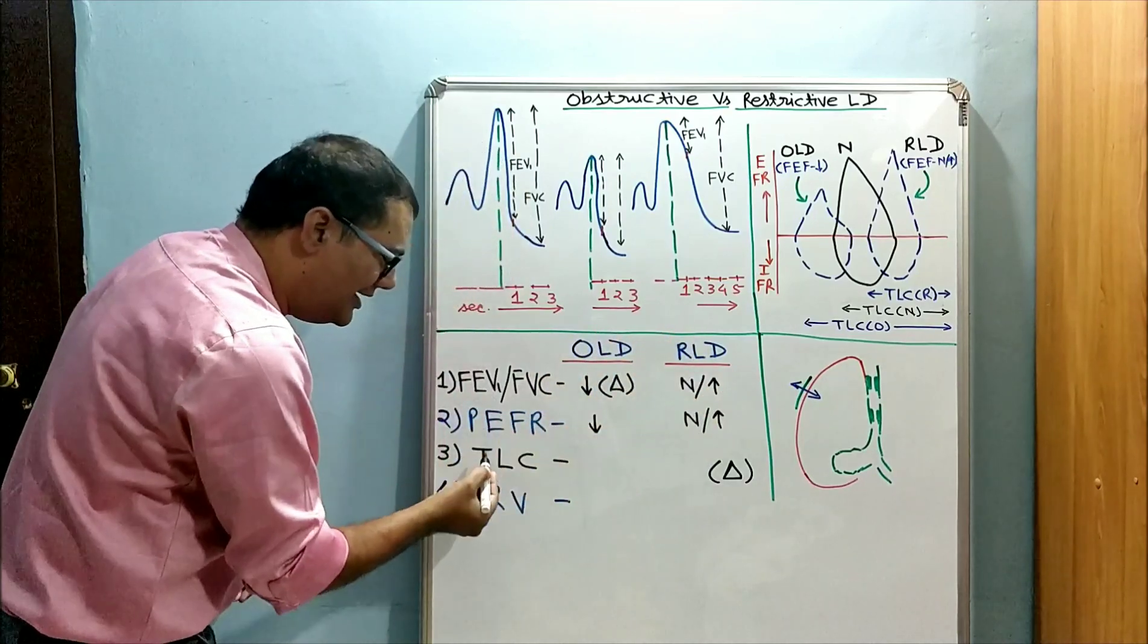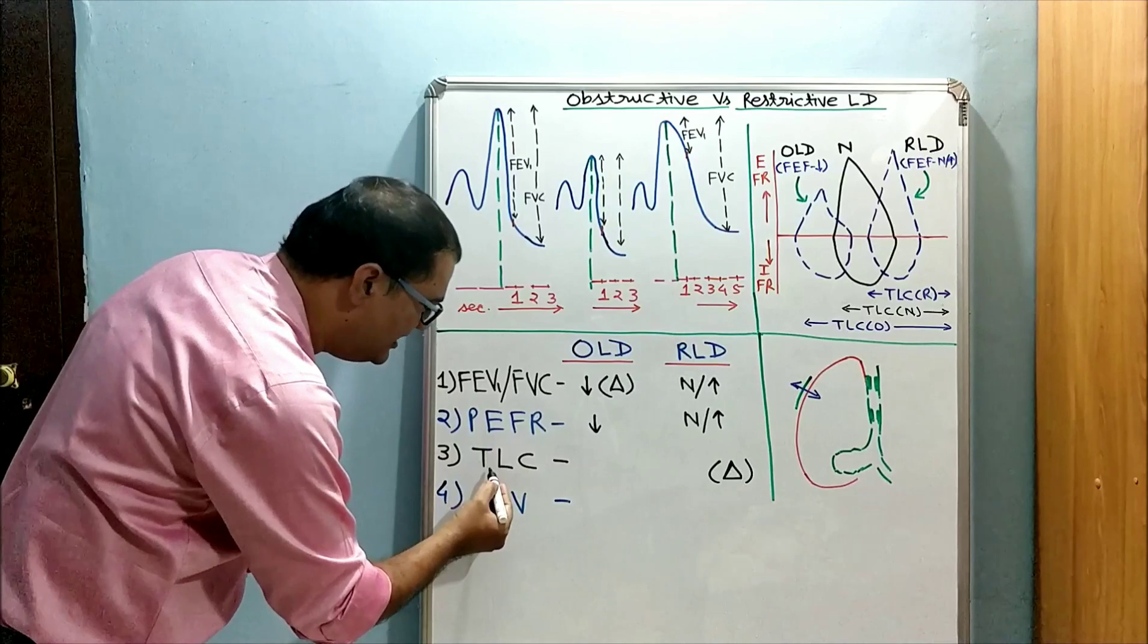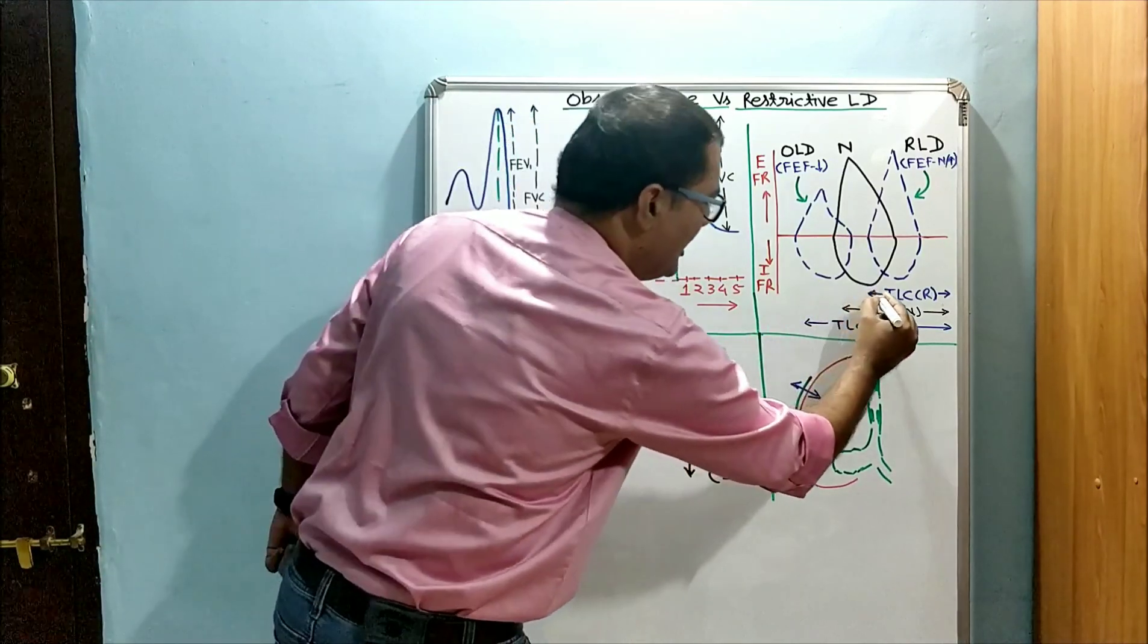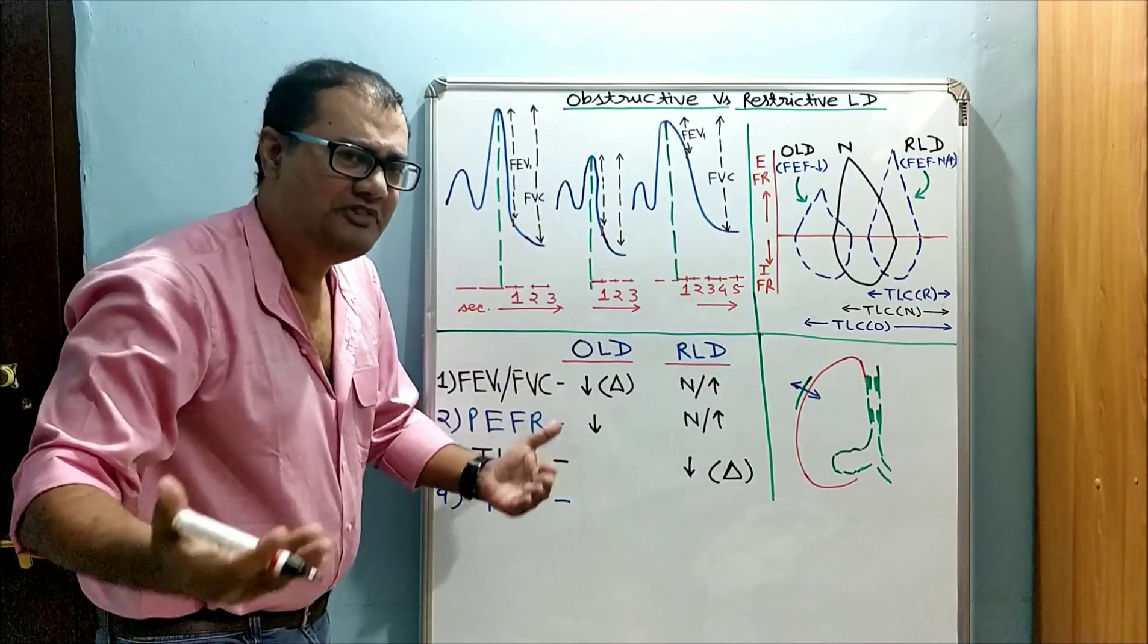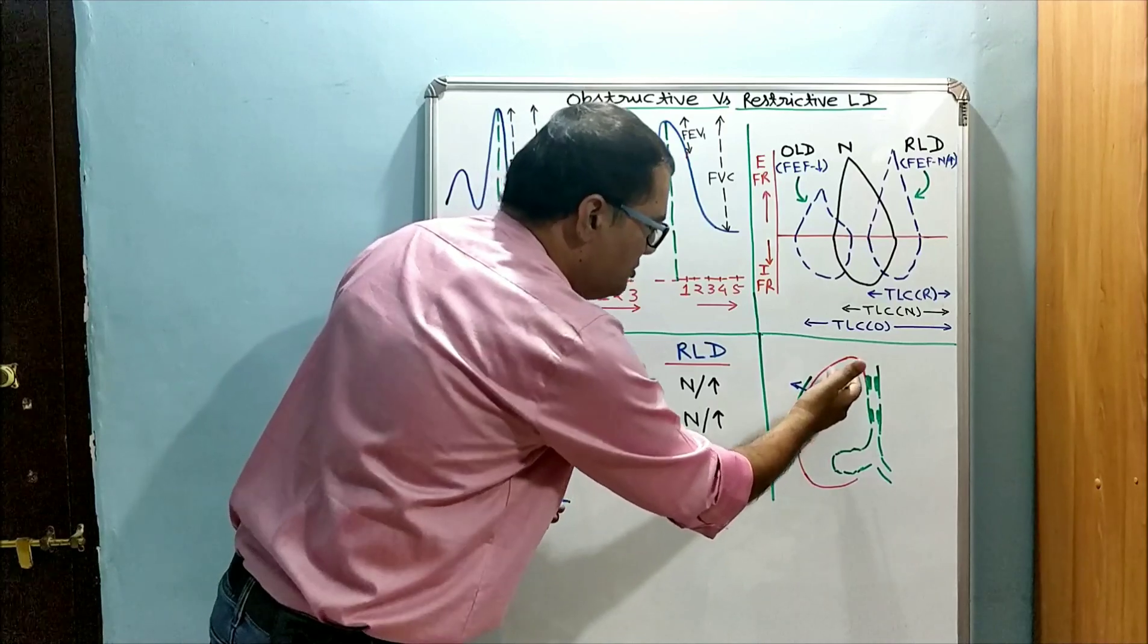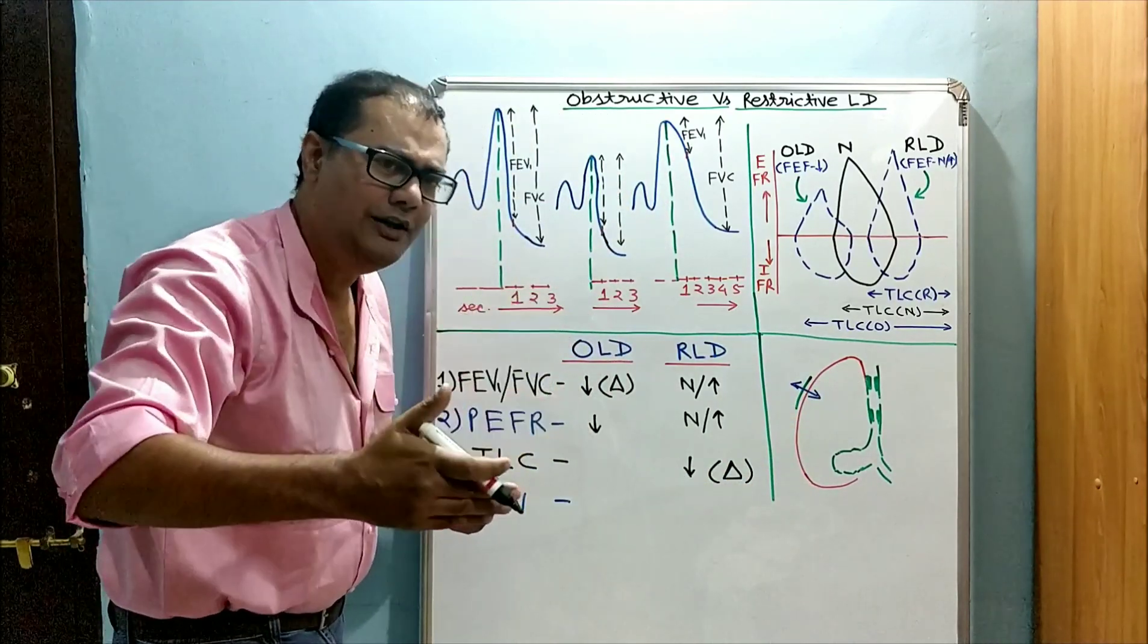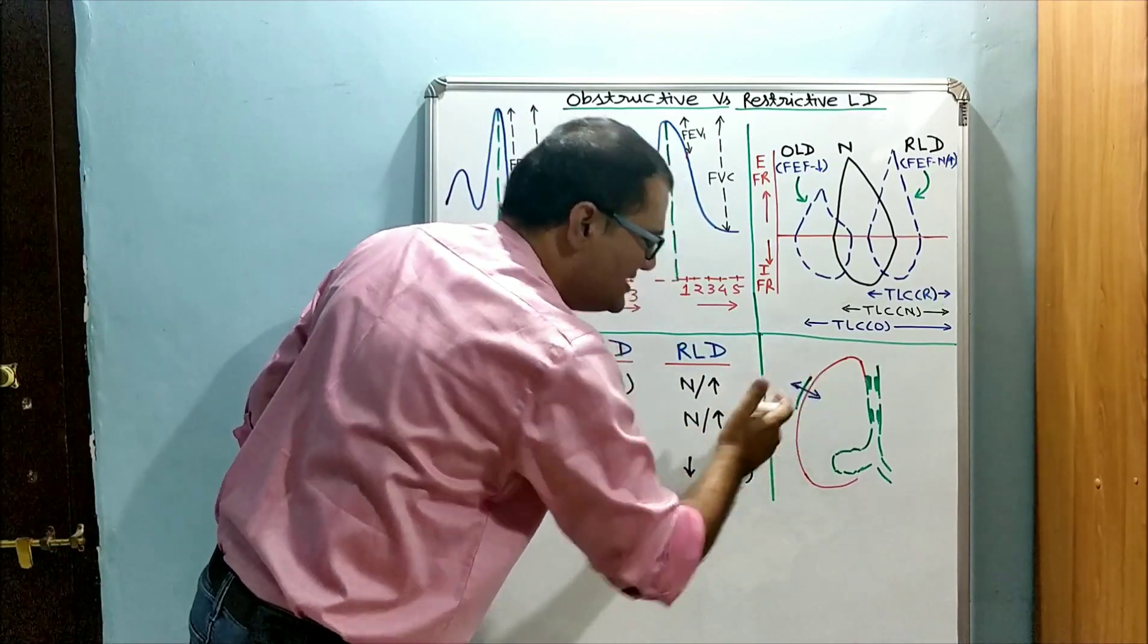Restrictive lung disease, on the other hand, is diagnosed mainly on the basis of decreased total lung capacity. Total lung capacity is decreased because this disease, or group of diseases, is because of problems or disorders affecting alveolar wall, pleura, or thoracic cage, in which expansion is affected.